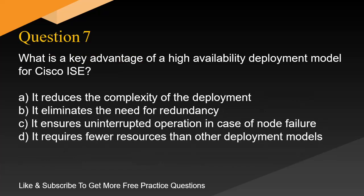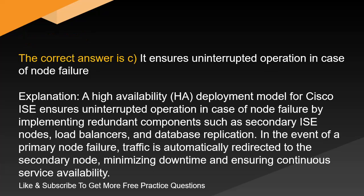Question 7. What is a key advantage of a high-availability deployment model for Cisco ISE? A. It reduces the complexity of the deployment. B. It eliminates the need for redundancy. C. It ensures uninterrupted operation in case of node failure. D. It requires fewer resources than other deployment models. The correct answer is C. It ensures uninterrupted operation in case of node failure.